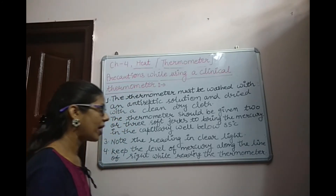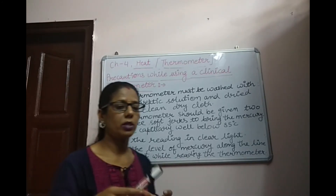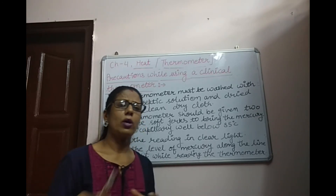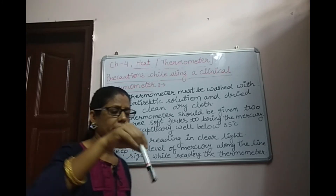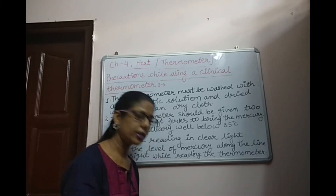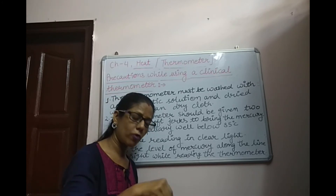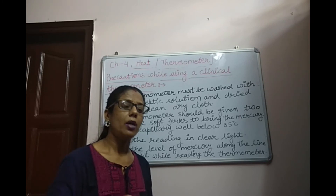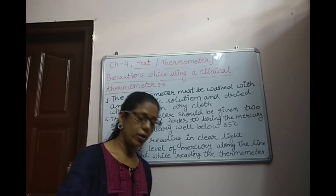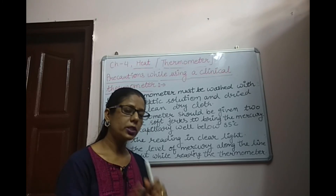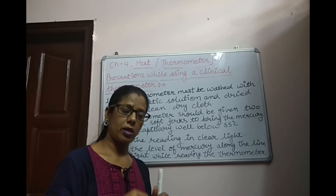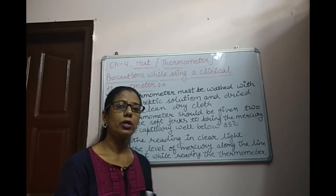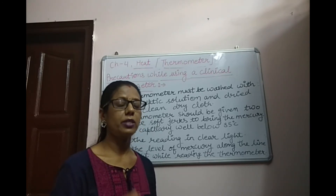If the thermometer breaks and mercury falls on the floor in the form of small droplets, take some wheat flour, roll it over the mercury, put the contaminated wheat flour in a polythene bag, tie a knot, and give it to the nearest pharmacy for disposal — because mercury is very poisonous.